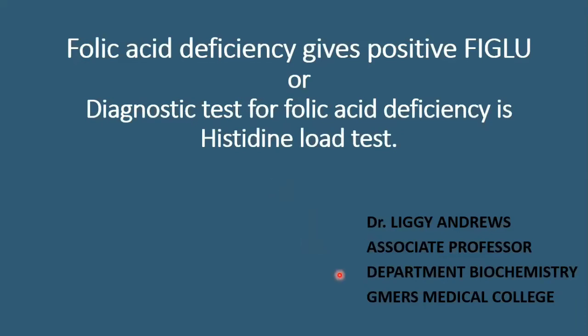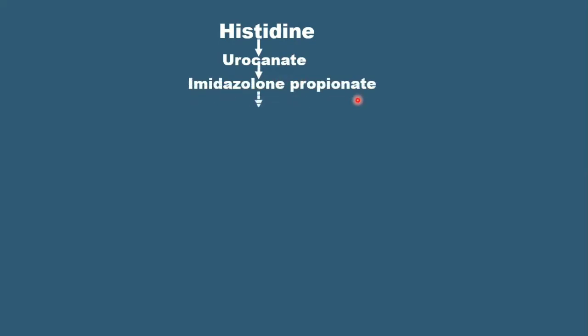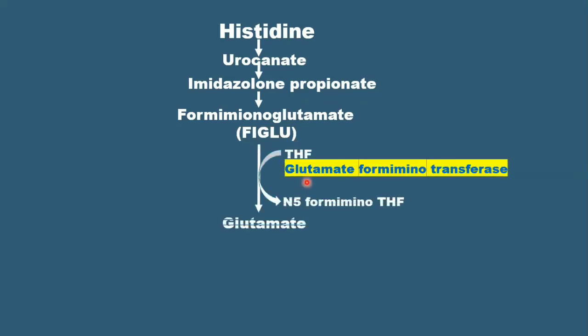Histidine is metabolized into urocanate, then further metabolized into imidazolone propionate, further into formiminoglutamate, also known as FIGLU. In the presence of glutamate formiminotransferase, it transfers the formimino group to tetrahydrofolate and itself gets converted into glutamate.